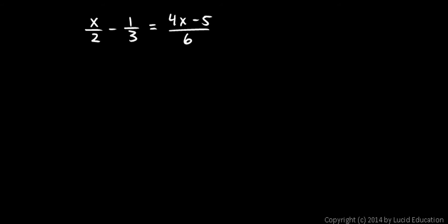This is a fractional equation, but it contains multiple terms. You see the x over 2 is one term, the negative 1 third is one term, and on the right we have one big term, 4x minus 5 over 6.